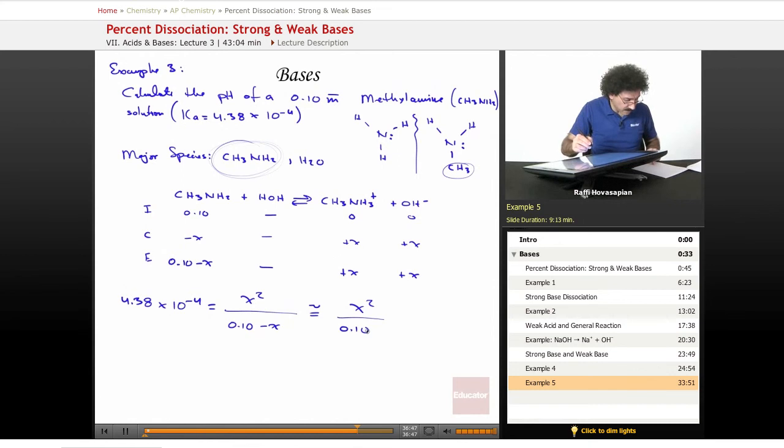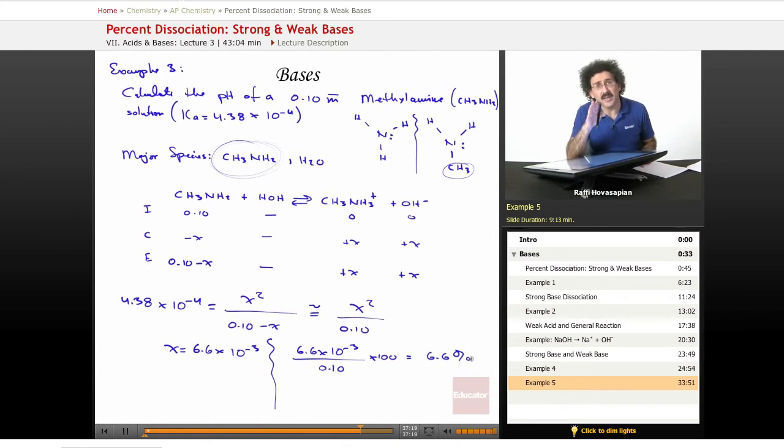When we do this approximation, we end up with X equal to 6.6 times 10 to the negative 3. Let's check the validity of this. Let's see if our approximation is valid. 6.6 times 10 to the negative 3 over 0.10 times 100. It actually equals 6.6%. 6.6% is too high. It's close to the 5, but it really is too high.